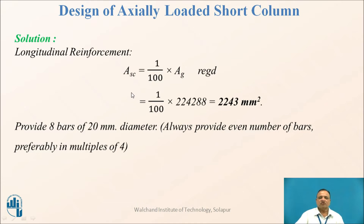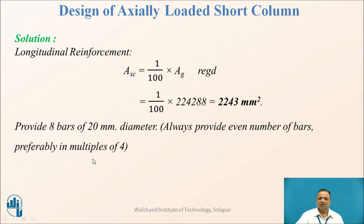Longitudinal reinforcement: steel is 1% of Ag, giving 2243 mm². Provide 8 bars of 20 mm diameter. Always provide an even number of bars so they can be distributed properly. The minimum required number of bars is 4.